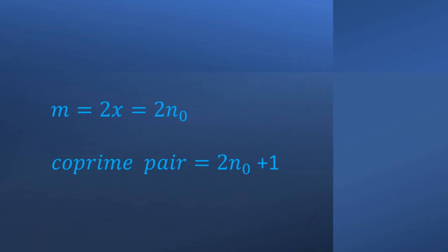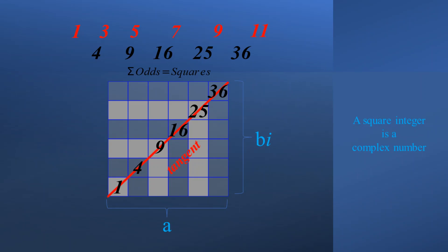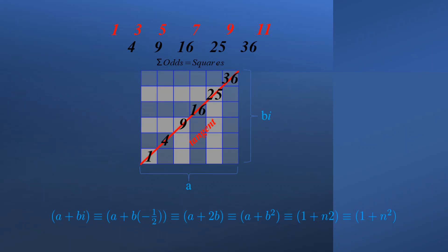Therefore, we can state that a coprime pair equals 2n sub 0 plus 1. We form two pivotal equations: m equals 2x equals 2n sub 0, and a coprime pair equals 2n sub 0 plus 1. These two equations form the basis of an infinite set of coprime pairs that generate an infinite set of Pythagorean triples. Given Euclid's formula where c equals m squared plus n squared, we see that this coprime pair must be an expression of the Pythagorean theorem. Therefore m and n are orthogonal, and m plus n equals 2n sub 0 plus 1. This forms a complex number in the form a plus bi, equivalent to 1 plus n times 2. In fact, we can now see why we can apply our power rule to the even integers since i is equivalent to negative one-half, which is equivalent to 2.